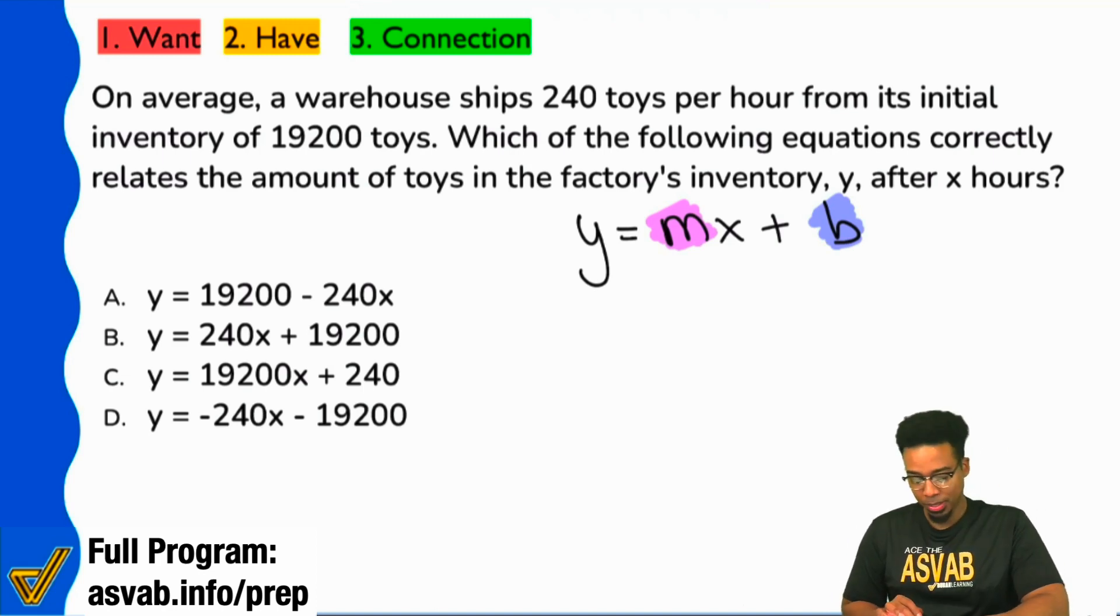We see here it says on average, a warehouse ships 240 toys per hour from its initial inventory of 19,200 toys. Okay, so everyone, that word per right there, I think gives it away that we're dealing with a rate.